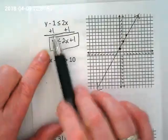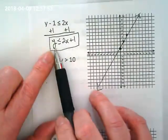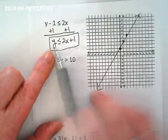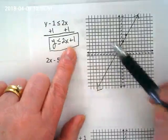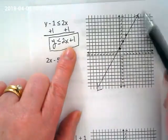So just to recap, we rewrote this equation to get y on its own. We used the y-intercept and slope to find some points and drew our line.